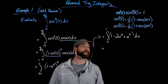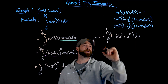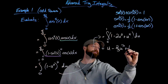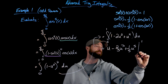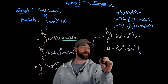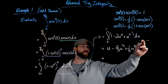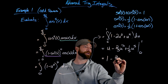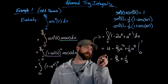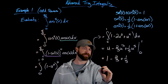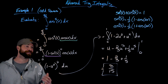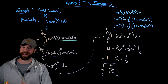Using the anti-power rule and evaluating from 0 to 1, I get u minus two-thirds u cubed plus one-fifth u to the fifth, evaluated from 0 to 1. Plugging in 1 gives me 1 minus 2/3 plus 1/5. Writing these in terms of fifteenths: 15/15 minus 10/15 plus 3/15 gives me 8/15. So there we have a method for attacking odd powers of trig functions.